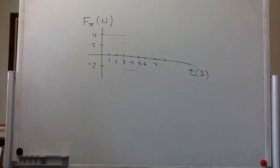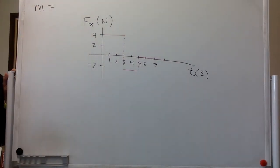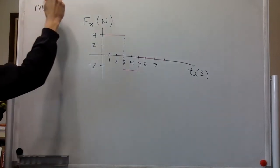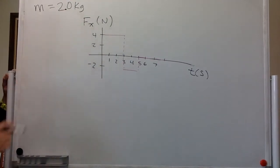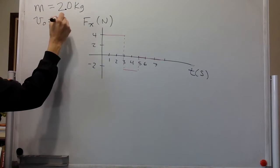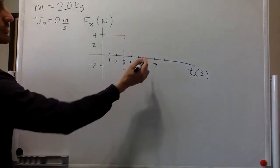So we are told that this force Fx is acting on a mass of 2.0 kilograms. The object is at rest at the origin at 0 seconds. What are its acceleration and velocity at t equals 6 seconds?